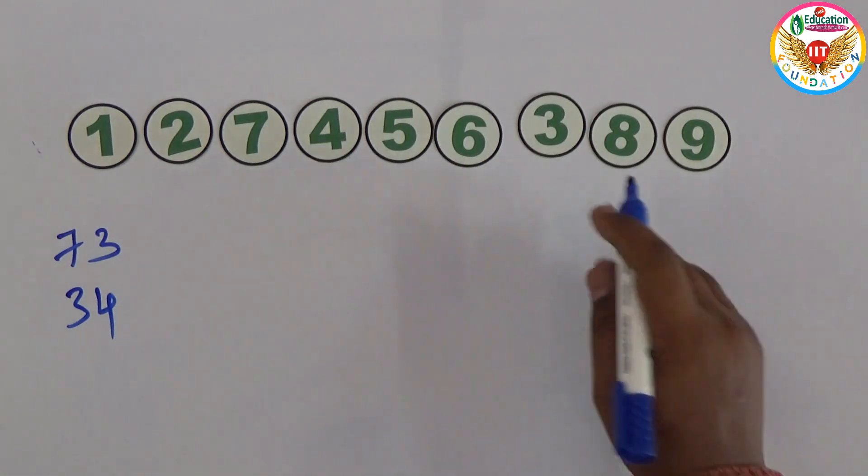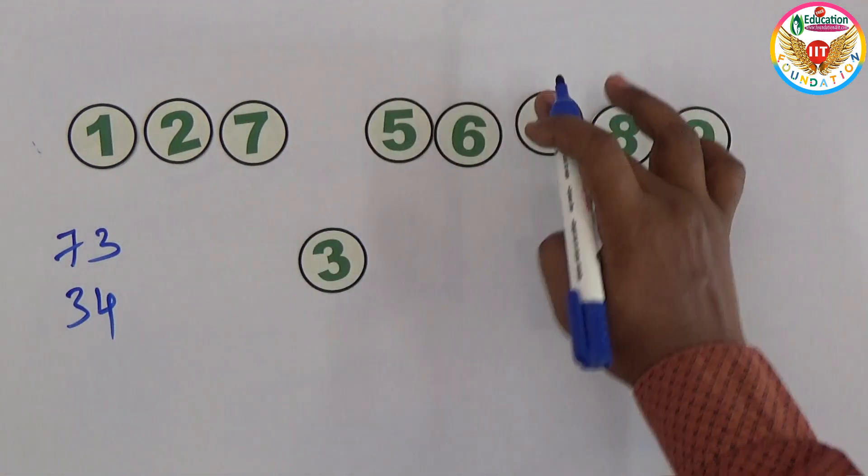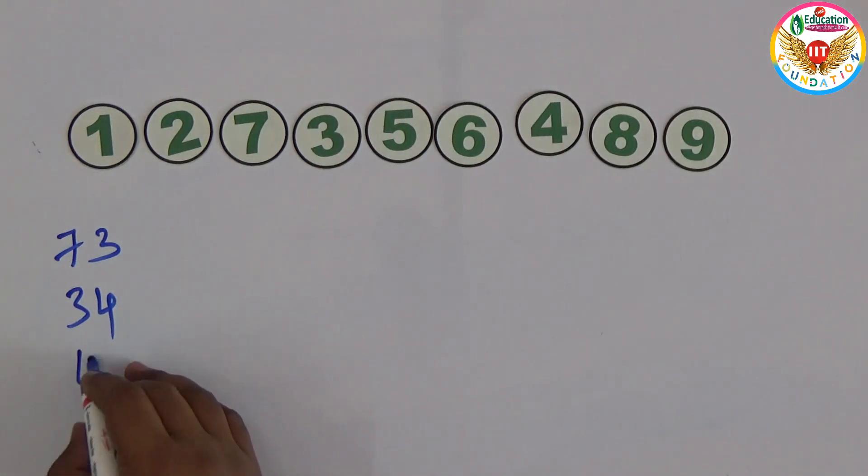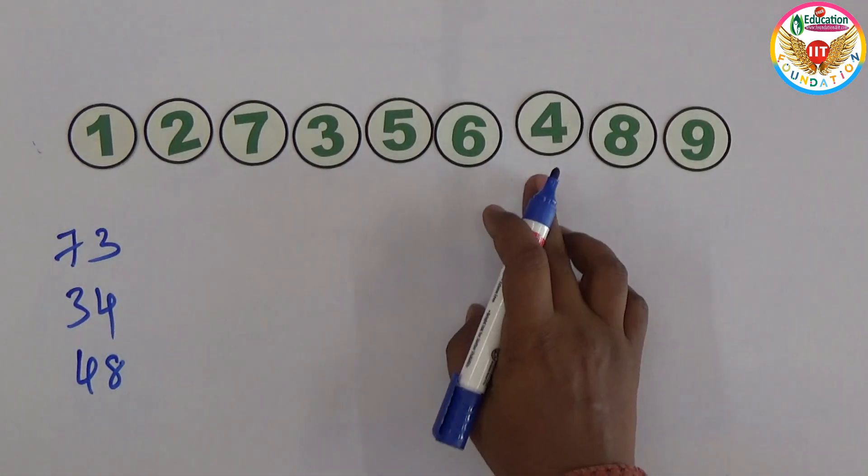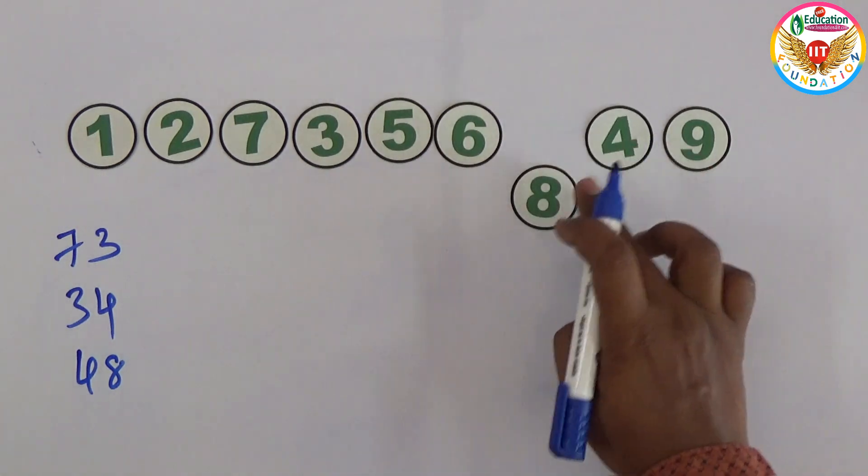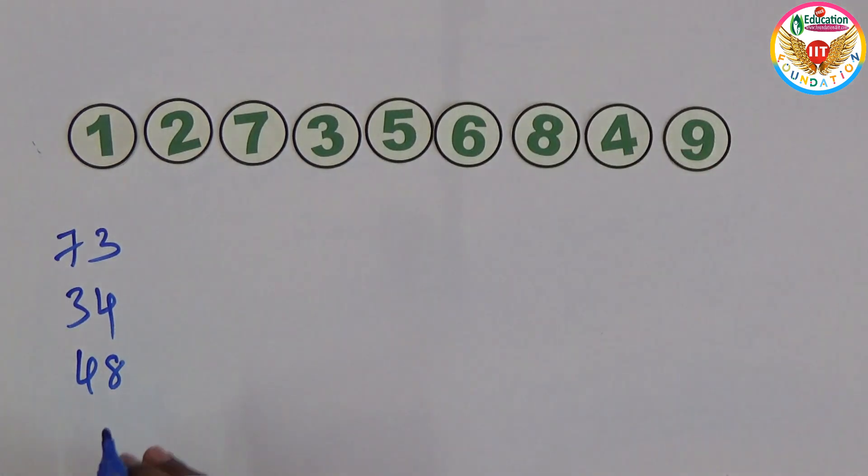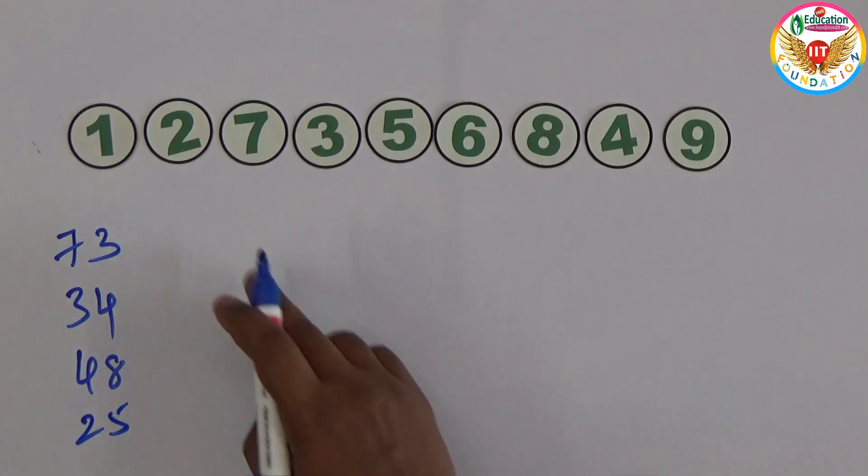3 and 4. 4 and 8, 4 and 8. Next 2 and 5. So the fourth move is 2 and 5. 2 and 5, right.